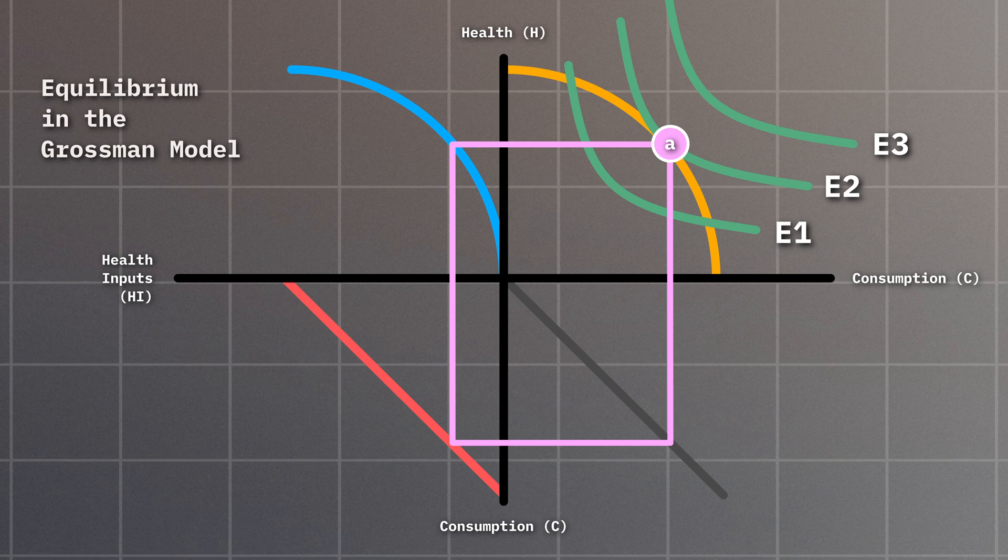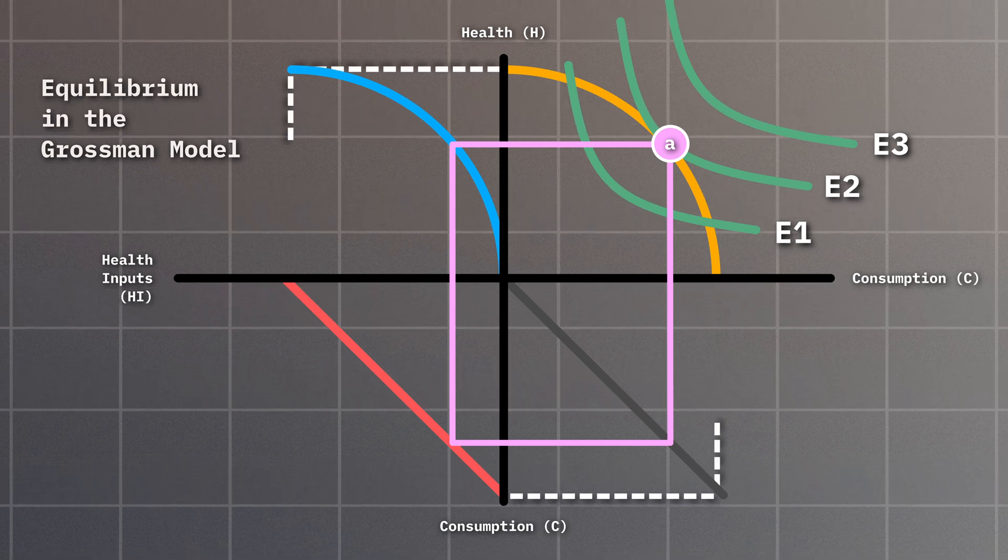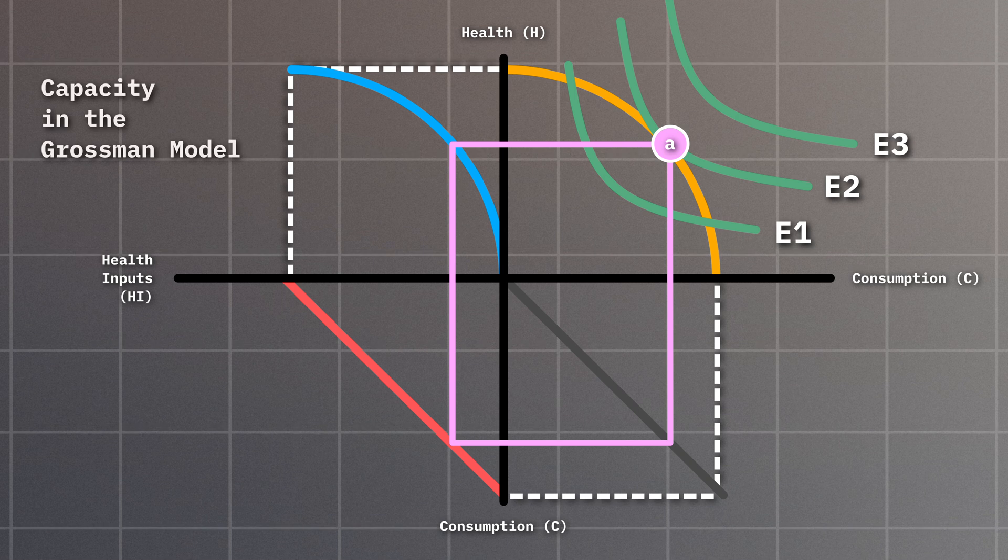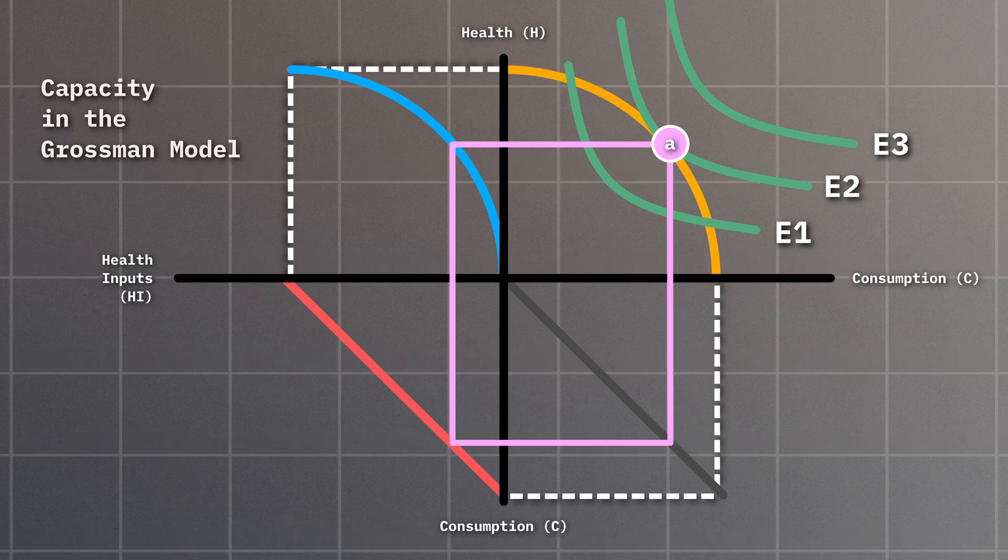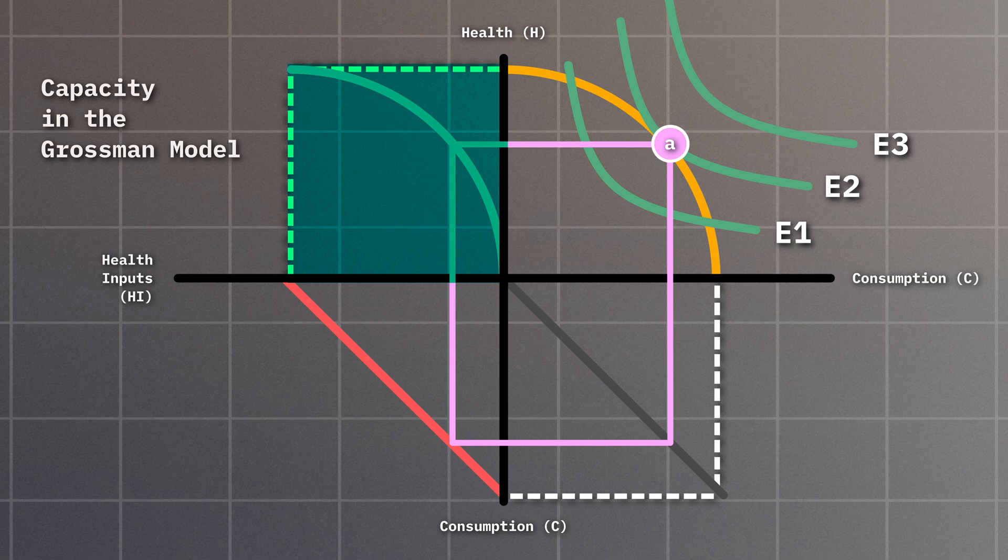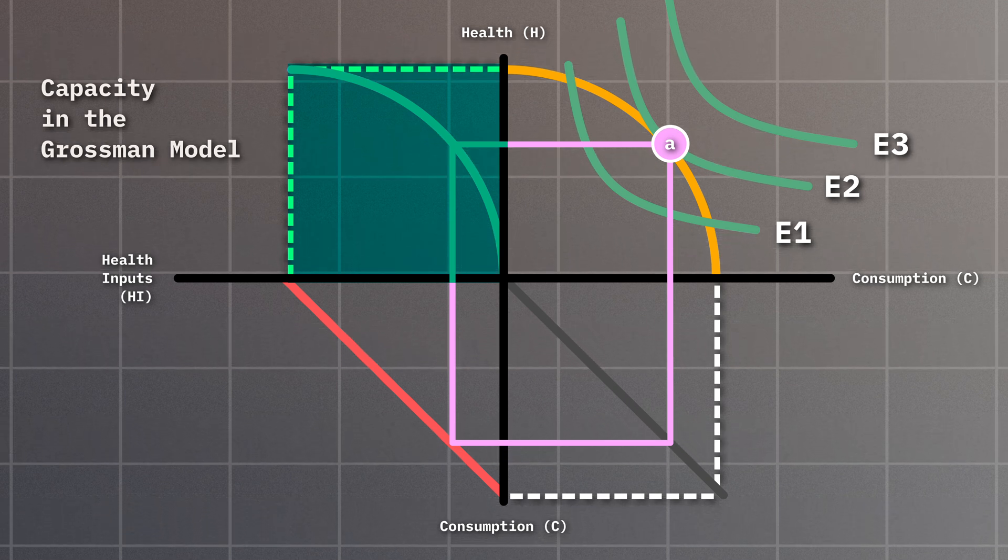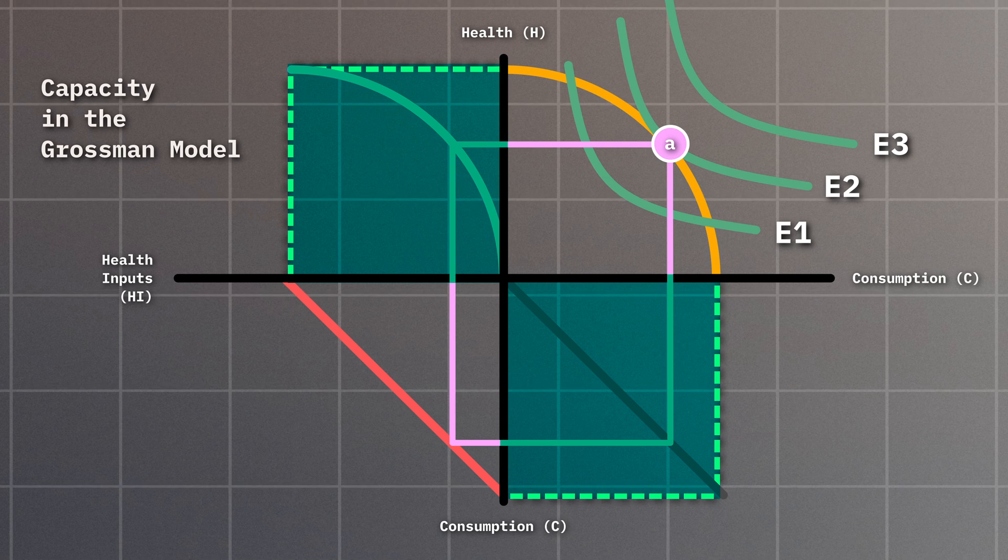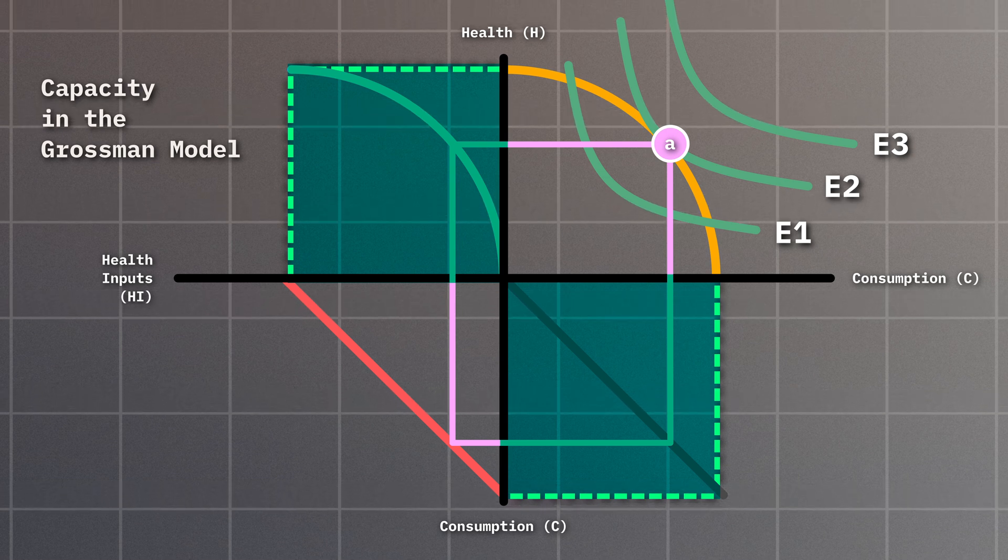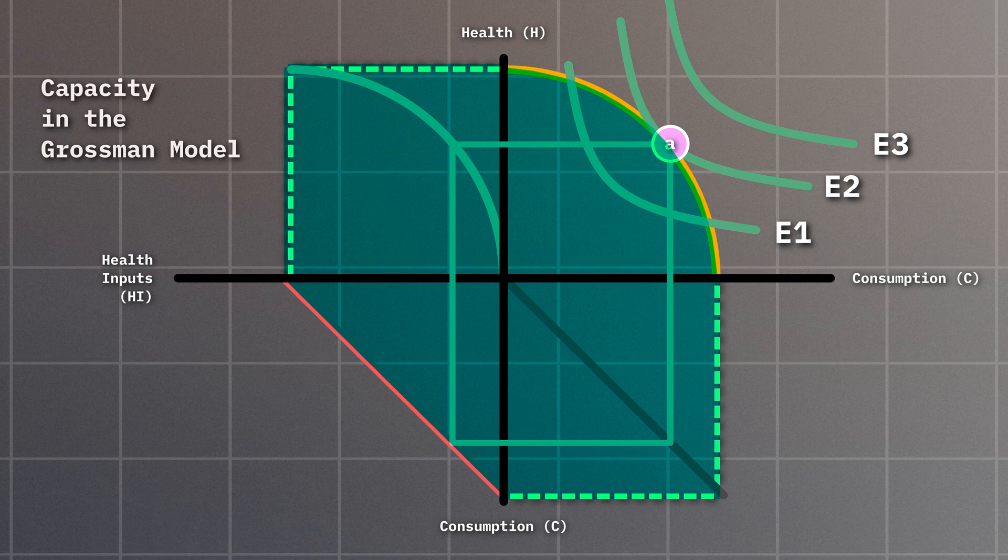Our equilibrium lies within the limit of our model capacity, which we can visualize using dotted lines like this. These limits show the different configurations of our model, including one in which we produce as much health as we can by maximizing the number of health inputs we purchase, as well as another where we maximize consumption. They also reflect any possible configuration in between those two extreme cases, including our equilibrium.